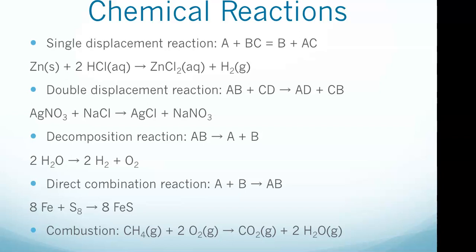Moving to a double displacement reaction - these are type of reactions in which two reactants exchange ions to form two new compounds. Double displacement reactions take the form AB + CD = AD + CB. The reaction between silver nitrate and sodium chloride is a double displacement reaction. The silver trades its nitrate ion for the sodium's chloride ion, causing the sodium to pick up the nitrate anion.